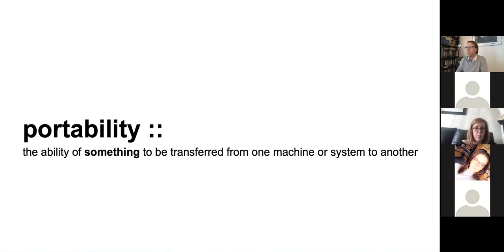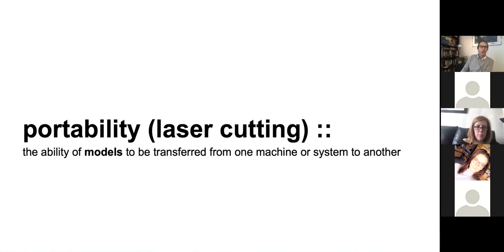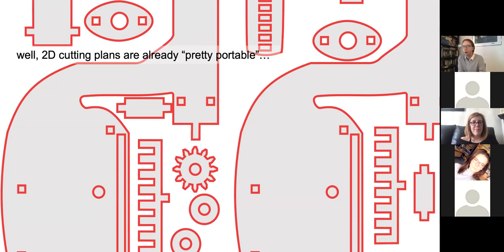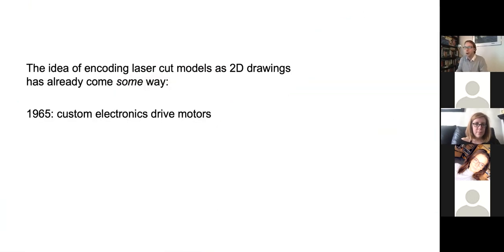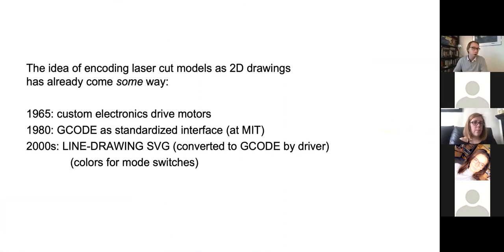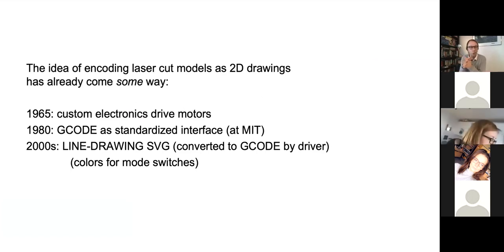So if portability is the ability of something to be transferred from one machine or system to another, what would that mean in the context of laser cutting? That would be the models being transferred from one machine or system to another. Let's look at where we stand right now. There has been a time where laser cutters were controlled with custom electronics. Then G-code, developed at MIT, became the de facto standard around the 80s. And more recently we have these 2D cutting plans — one level of abstraction higher than G-code, which can make use of colors to switch different modes.